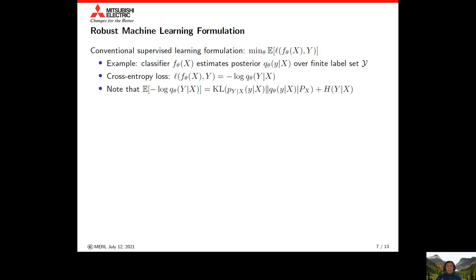Let's talk about how robust machine learning formulations are put together. First, a conventional supervised learning formulation, which is typically formulated as minimizing some expected loss function with respect to the model F theta. For example, if F theta is a classifier looking at input x, it produces an estimate of a posterior distribution of the label class over some finite label set.